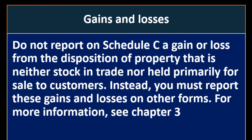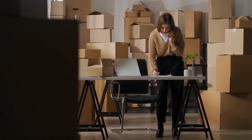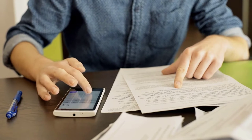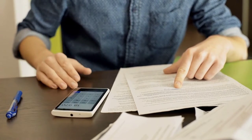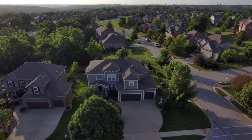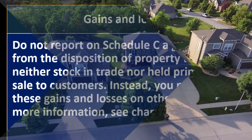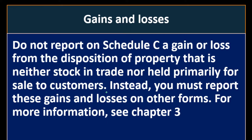Do not report on Schedule C a gain or loss from the disposition of property that is neither stock in trade nor held primarily for sale to customers. If it's held primarily for sale to customers, it would be like inventory — possibly part of cost of goods sold. Schedule C is like one half of the full financial statements: it has the income statement but not the balance sheet. Property such as plant and equipment would be tracked separately with accumulated depreciation. If there are sales of such property, they could be reported on other forms. You must report these gains and losses on other forms; see Chapter 3 of Publication 334.